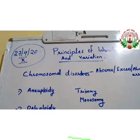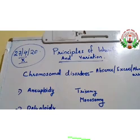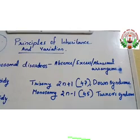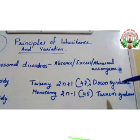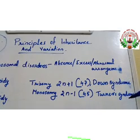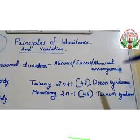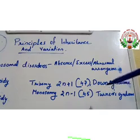Aneuploidy can be of different types like trisomy or monosomy. Trisomy is a condition where a single chromosome is extra. An example is Down syndrome, where the 21st chromosome is present as 3 copies. We have 22 pairs of autosomes and 1 pair of sex chromosomes. In Down syndrome, the 21st pair of autosomes is present as 3 copies.